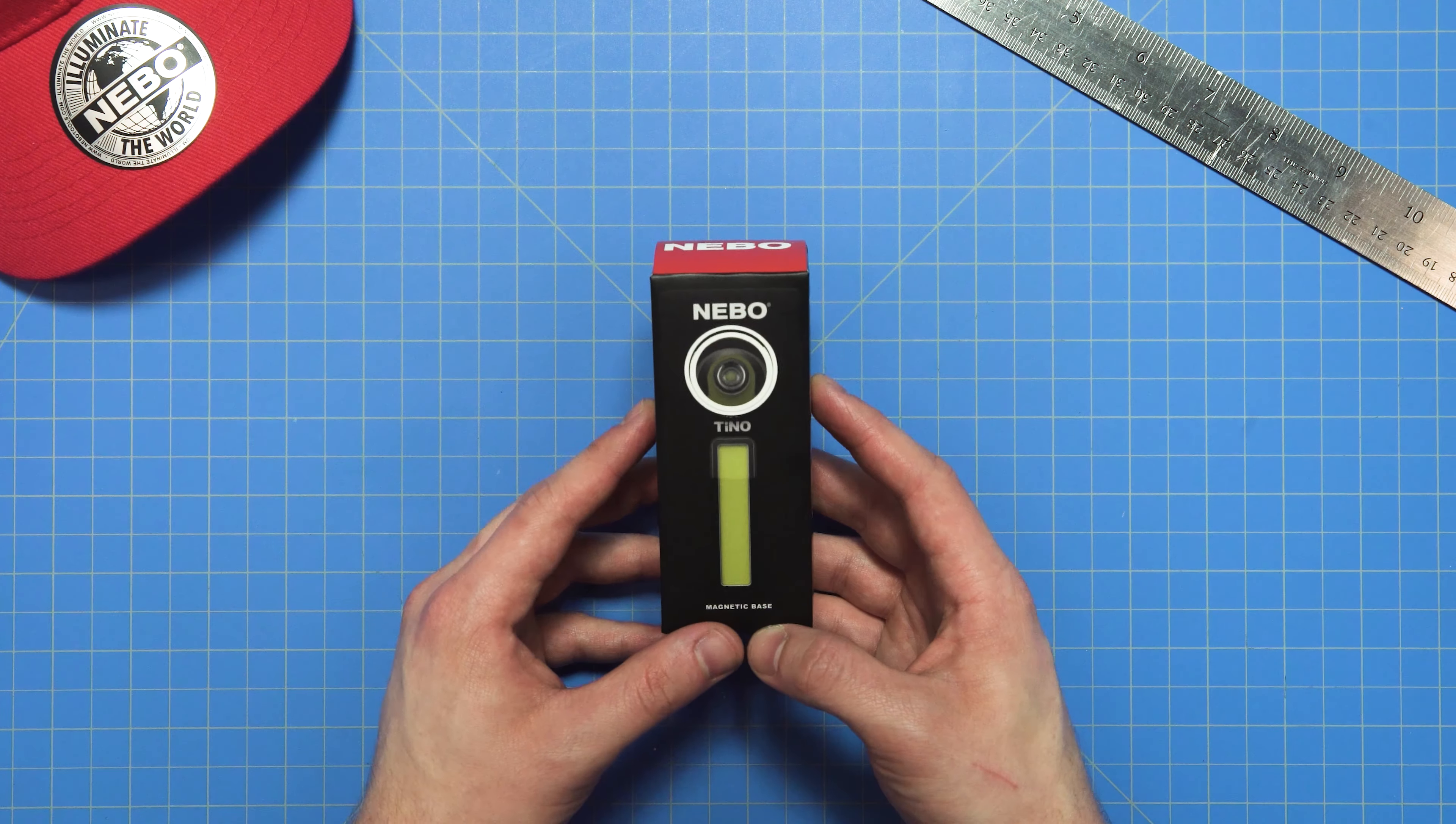Like most Nebo lights, there is a magnetic base on the bottom. And on the back of the light here, there is a strong plastic clip with grips that help keep it from sliding. There is also a hanging hook attached to the clip, which can be utilized by lifting it from the clip and swinging it up like this.